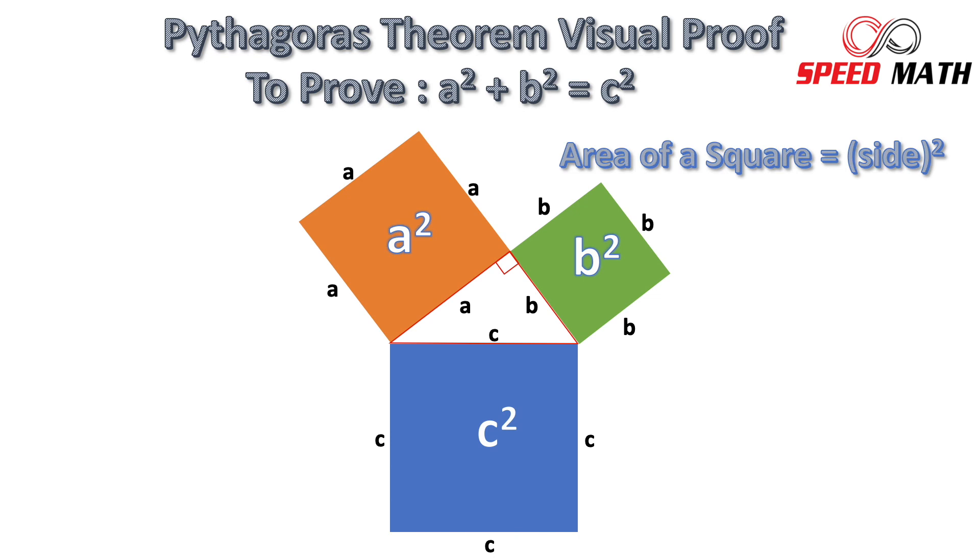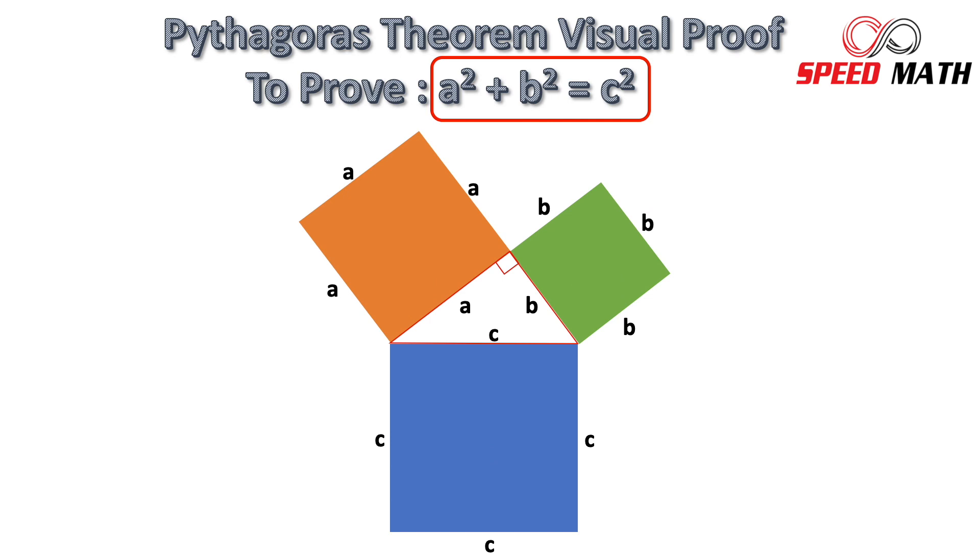Now somehow we need to show visually that A square plus B square is equal to C square. For that, let's draw a diagonal for the orange square with side A and then let's do a small construction. Let's draw two segments in this way passing through the intersection point of diagonals and then we can get rid of the diagonals.